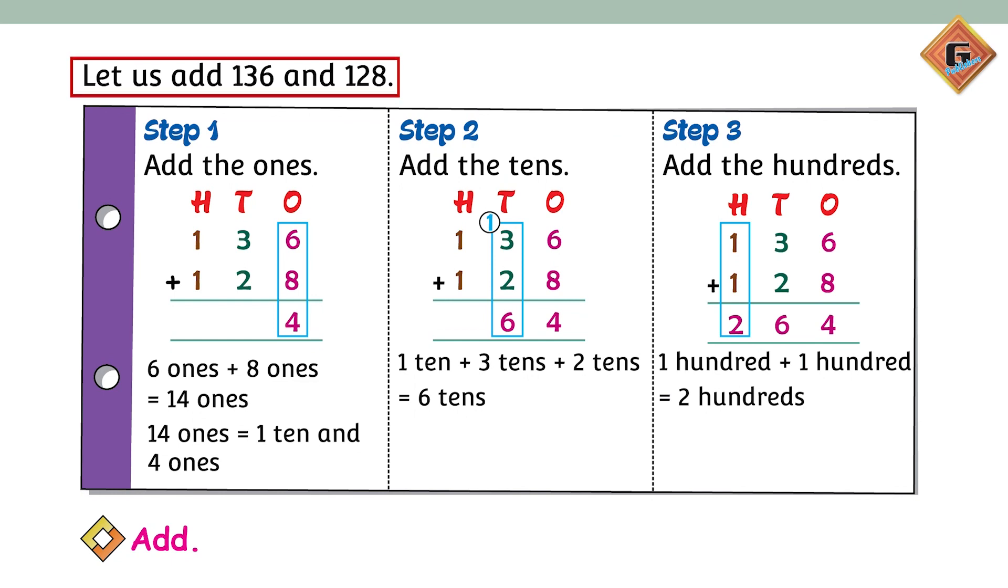Move to page 57. Let us add 136 and 128. First step kya hai? Add the ones. 6 plus 8 kya ho gay? Very good, 14 ones. 14 ones mein there is 1 ten and 4 ones. So hum kya karenge? 4 ko ones ki side pe likhenge and carry 1 ko. It is going to be written on the tens column. Next step, you are going to add the tens: 1 plus 3 plus 2 is equal to 6. Very good.